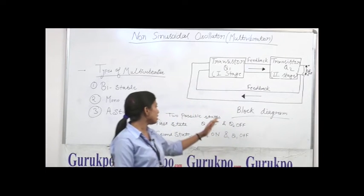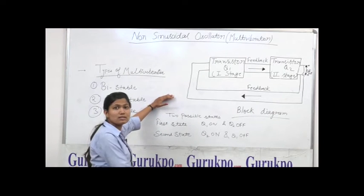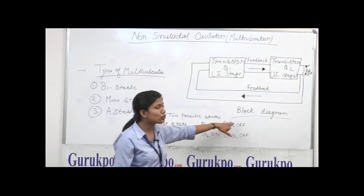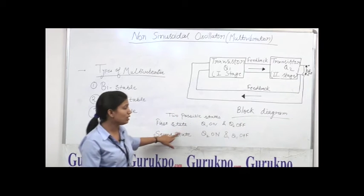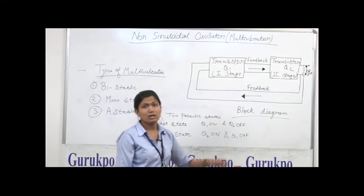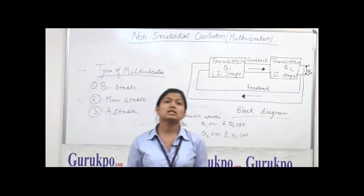These are the two states of the transistor. The first state is when Q1 is on and Q2 is off, and the second state is when Q2 is on and Q1 is off. So these are the two states of a multivibrator.